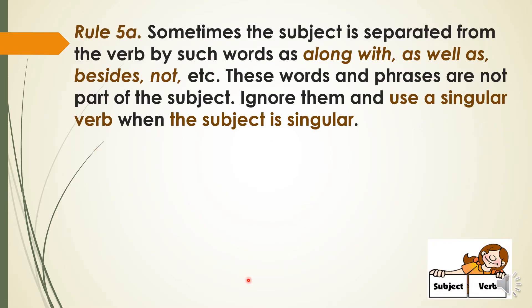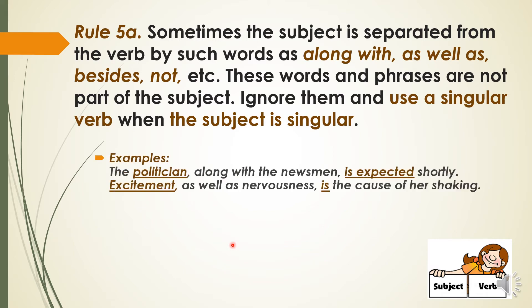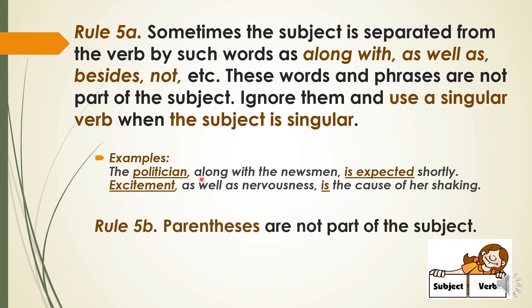Sometimes the subject is separated from the verb by such words as 'along with', 'as well as', 'besides', 'not'. These words and phrases are not part of the subject. Ignore them and use a singular verb when the subject is singular. For example, 'The politician along with the newsman is expected shortly.' 'Along with the newsman' is not part of the subject, so we connect the subject 'politician' with the verb in singular.